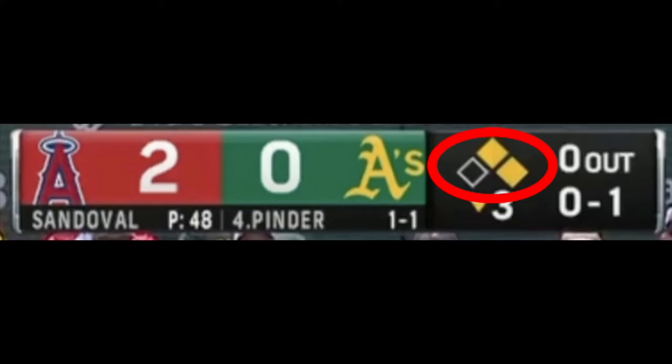This section tells us how many runners are on base. Each diamond represents a base, and if it's empty, there's nobody on that base, but if it's colored in, then there's somebody on that base. I can tell that there are runners on first and second base.